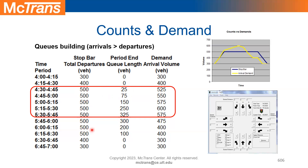Now let's look at the analysis period from 5:45 to 6:00. Our sensor at the stop bar tells us 500 vehicles got served, and the queue length is 300, but in the previous period the queue was 325. So the queue shrank by 25 vehicles, meaning we were able to serve 25 vehicles from the existing queue. Out of the 500 vehicles served, 25 came from the queue, so our actual demand was only 475. This is a scenario where demand is less than volume served.